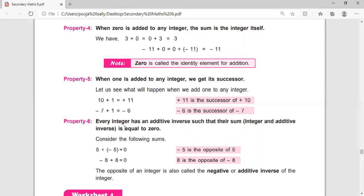Next is every integer has an additive inverse. Each integer has an opposite, and if we add the integer and its opposite, then we get zero. So if we take integer 5 and the opposite of 5 is minus 5, we add them and we get zero.